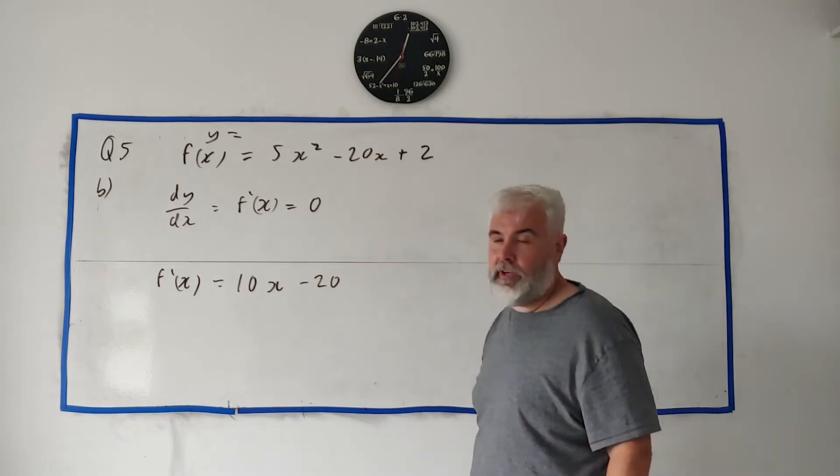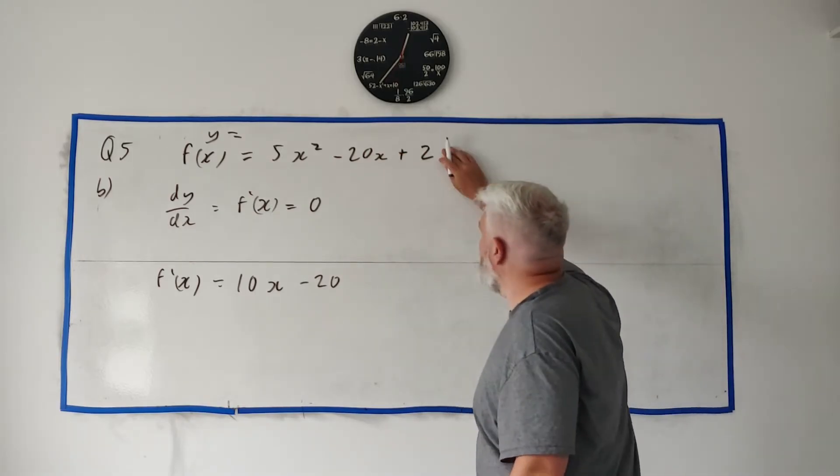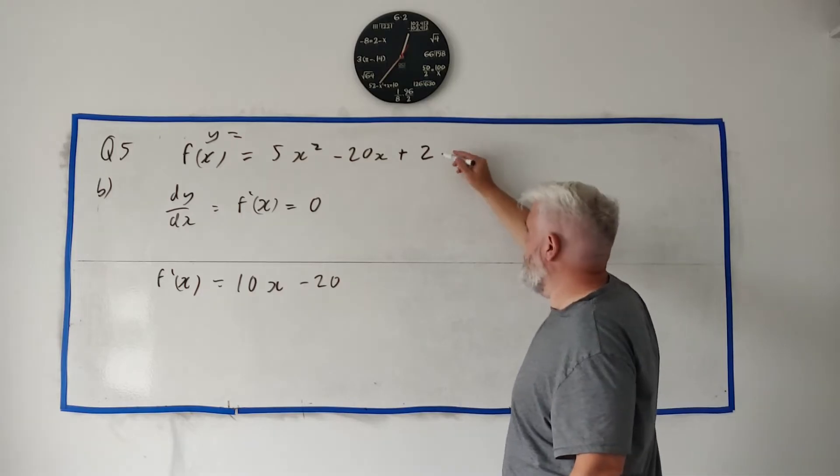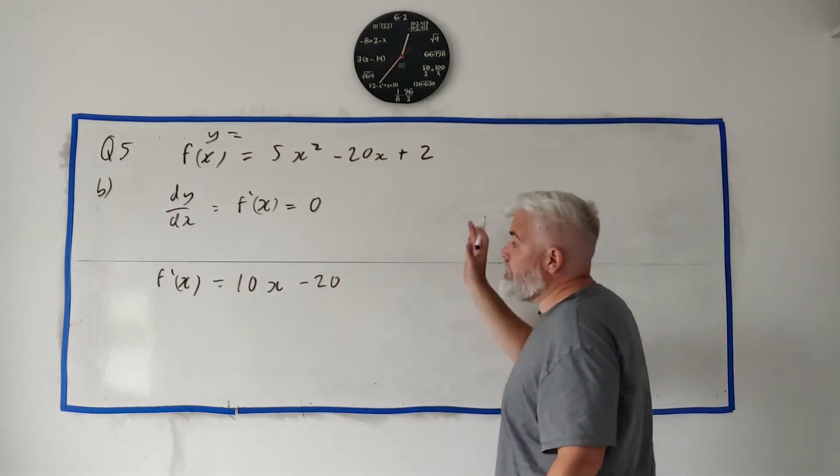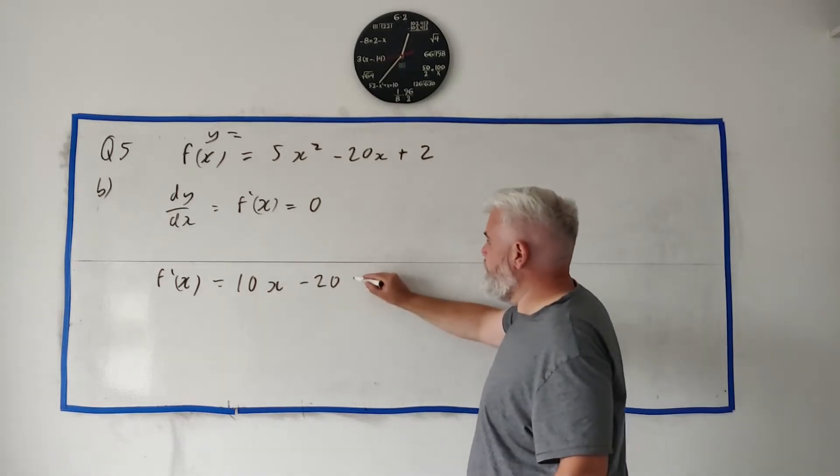And then finally 2 disappears, or you can think of x to the power of 0 here, 0 times 2 is 0, it's gone. That's your answer here.